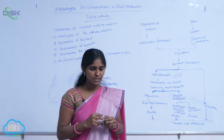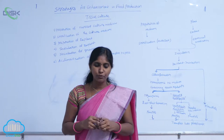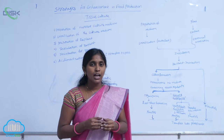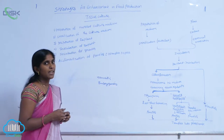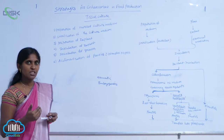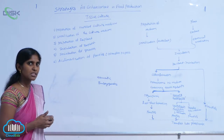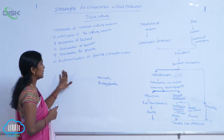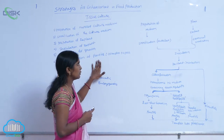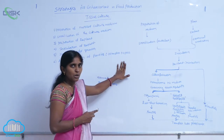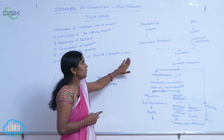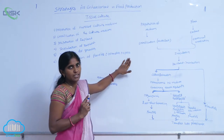The cultured plantlets are removed from the culture vessels and allowed to adapt to natural conditions — this process is called acclimatization. The plantlets are first transferred into greenhouses and then allowed into the natural fields.